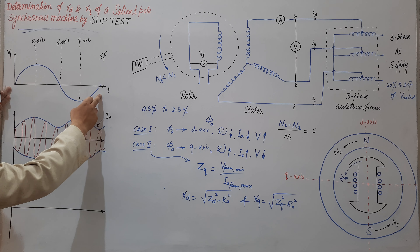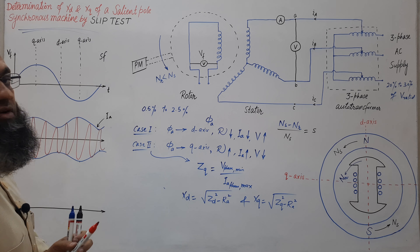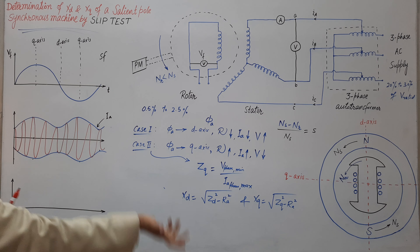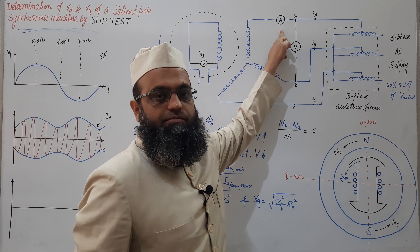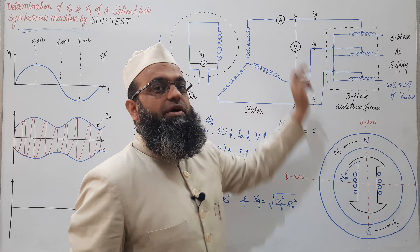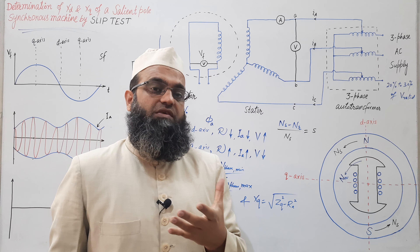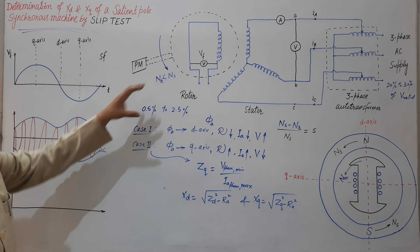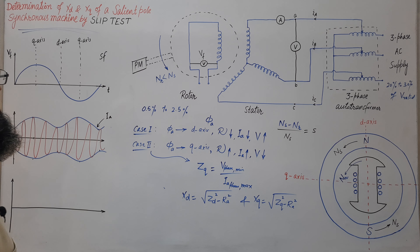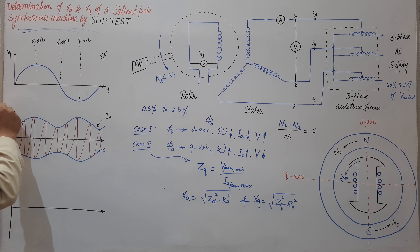So in one second, for 2 percent slip with supply frequency of 50 Hz, we will have two cycles of this variation in Ia observed by this ammeter. That is why it is difficult to observe two such cyclic readings in one second — that is why we need to keep the slip as low as possible. This is the armature current Ia.